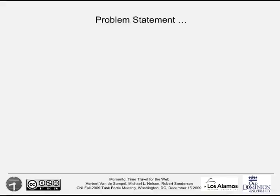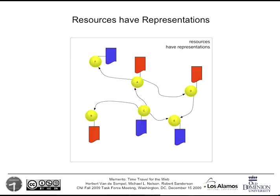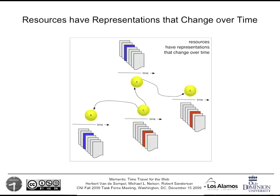The problem statement: this depicts the Web, with nodes as resources identified by HTTP URIs, interlinked by arrows. Resources have representations — those red and blue documents. But representations change over time. When you go to CNN.com today, you get a certain page. Tomorrow that page is gone and a new one appears. The Web architecture means at any moment you can only get the current representation of a resource.